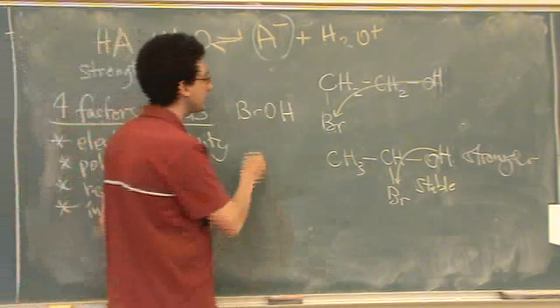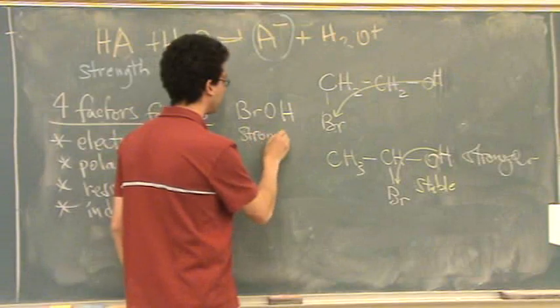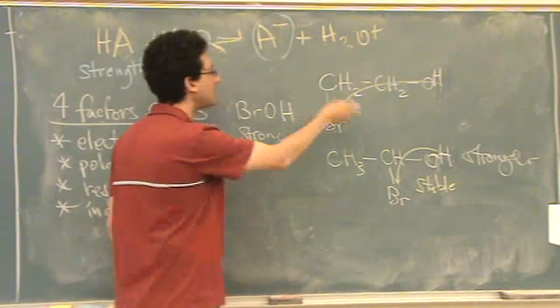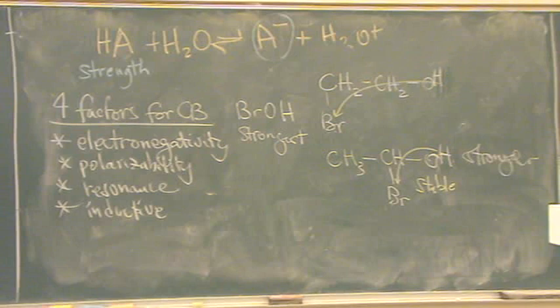Okay, so the strongest. The farther the bromine goes away from the charge, or even if it doesn't exist, the weaker it's going to be. Is that okay? That's the third factor.